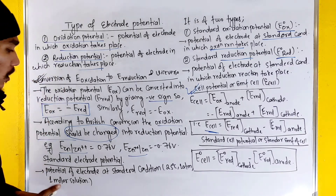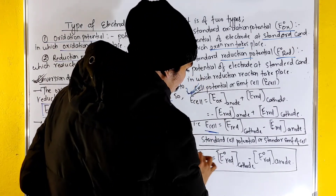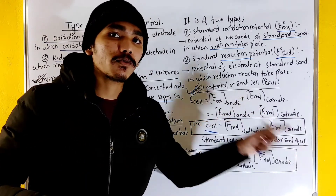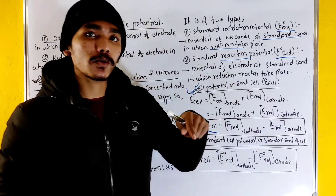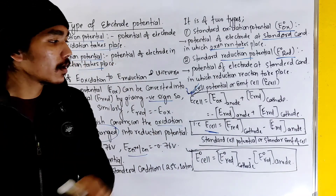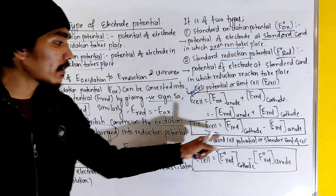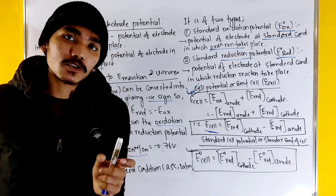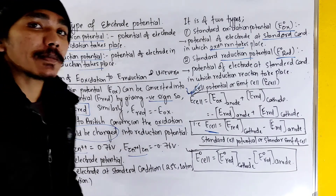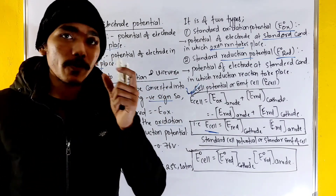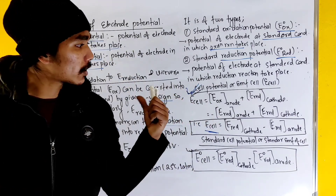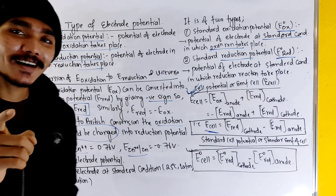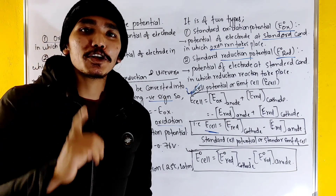This is the numerical formula. The cell potential is calculated using cathode and anode. Reduction potential at cathode minus reduction potential at anode gives the cell potential. We need to apply both reduction potentials under standard conditions. Now we are going to work through basic numericals.